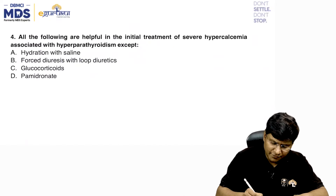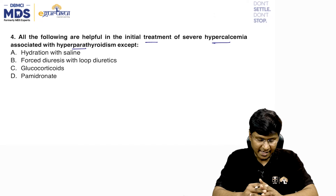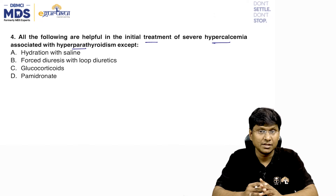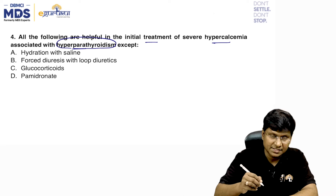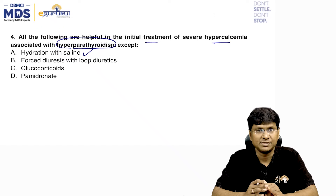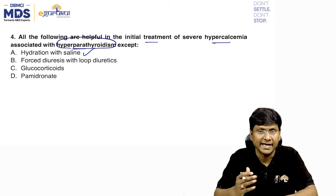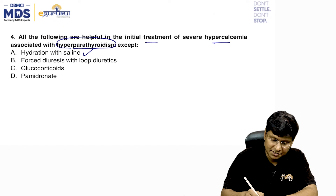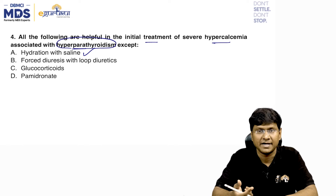Next question: all of the following are helpful in the initial treatment of severe hypercalcemia associated with hyperparathyroidism except — options: hydration with saline, forced diuresis with loop diuretics, glucocorticoids, pamidronate. In hyperparathyroidism, hypercalcemia is mainly due to increased osteoclastic activity. Hydration with saline dilutes calcium and ensures it is flushed out, making it a first-line treatment.